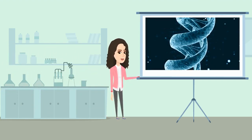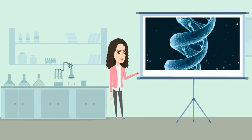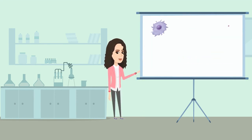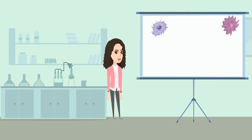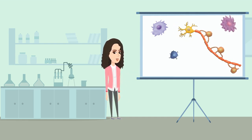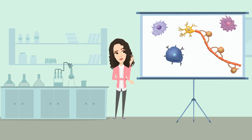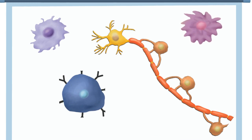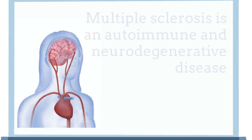Thousands of DNA variants have been associated with human diseases. In order to use these genetic variants to get new insights into disease biology, one critical step is to determine the cell type that is altered by the presence of the disease-associated allele. Whether a DNA variant confers risk by altering function in the blood versus the brain can lead to very different hypotheses about the pathogenesis of the trait.